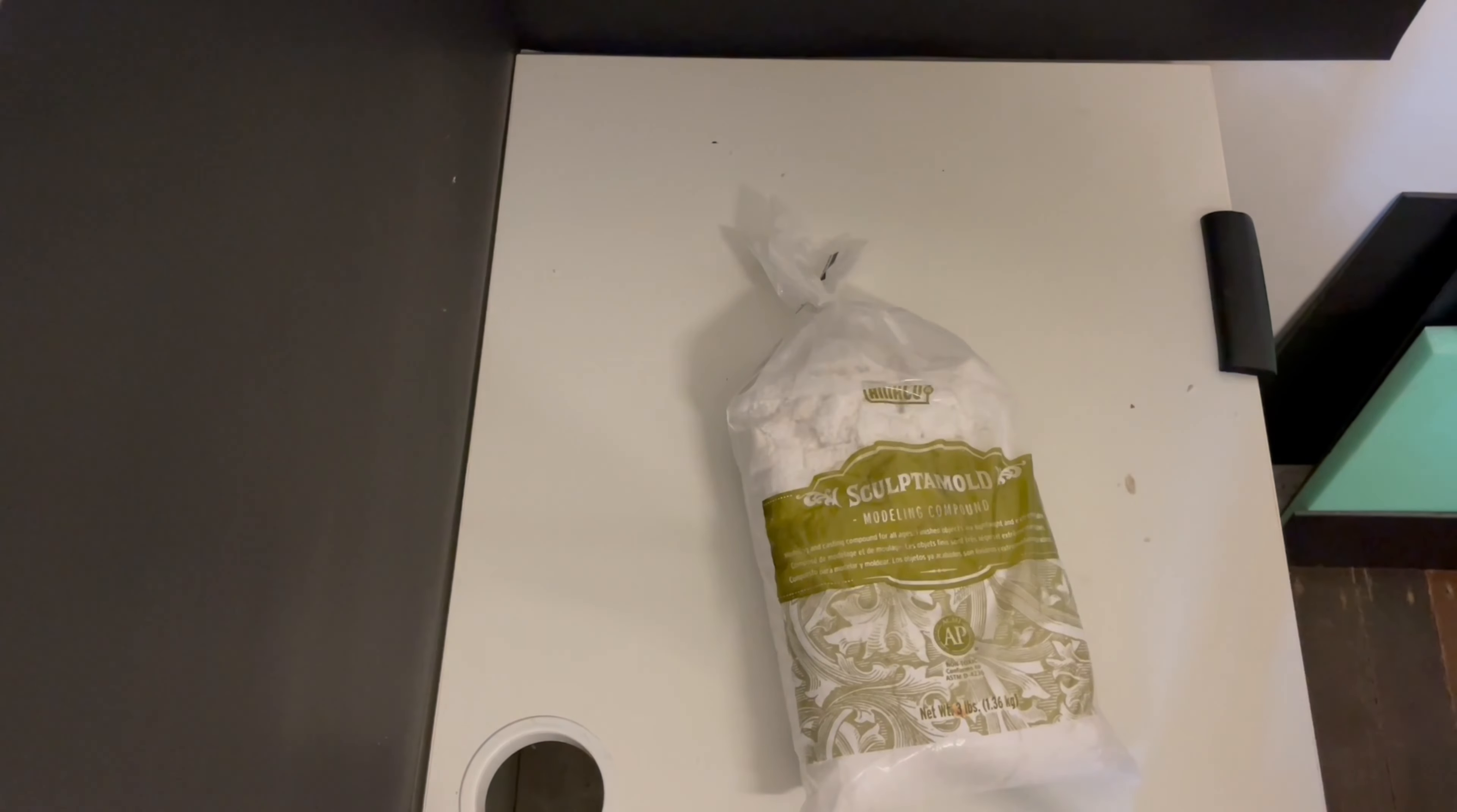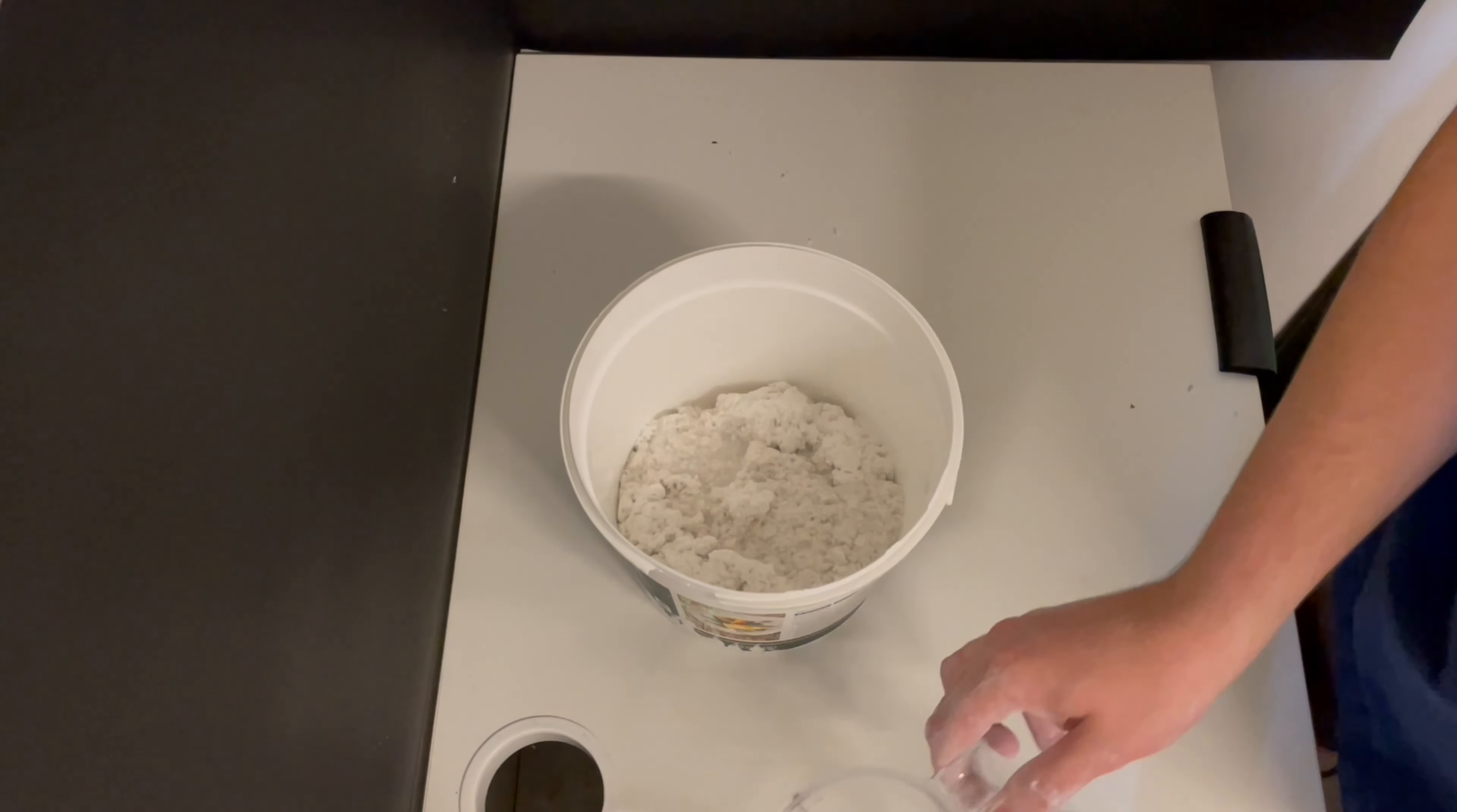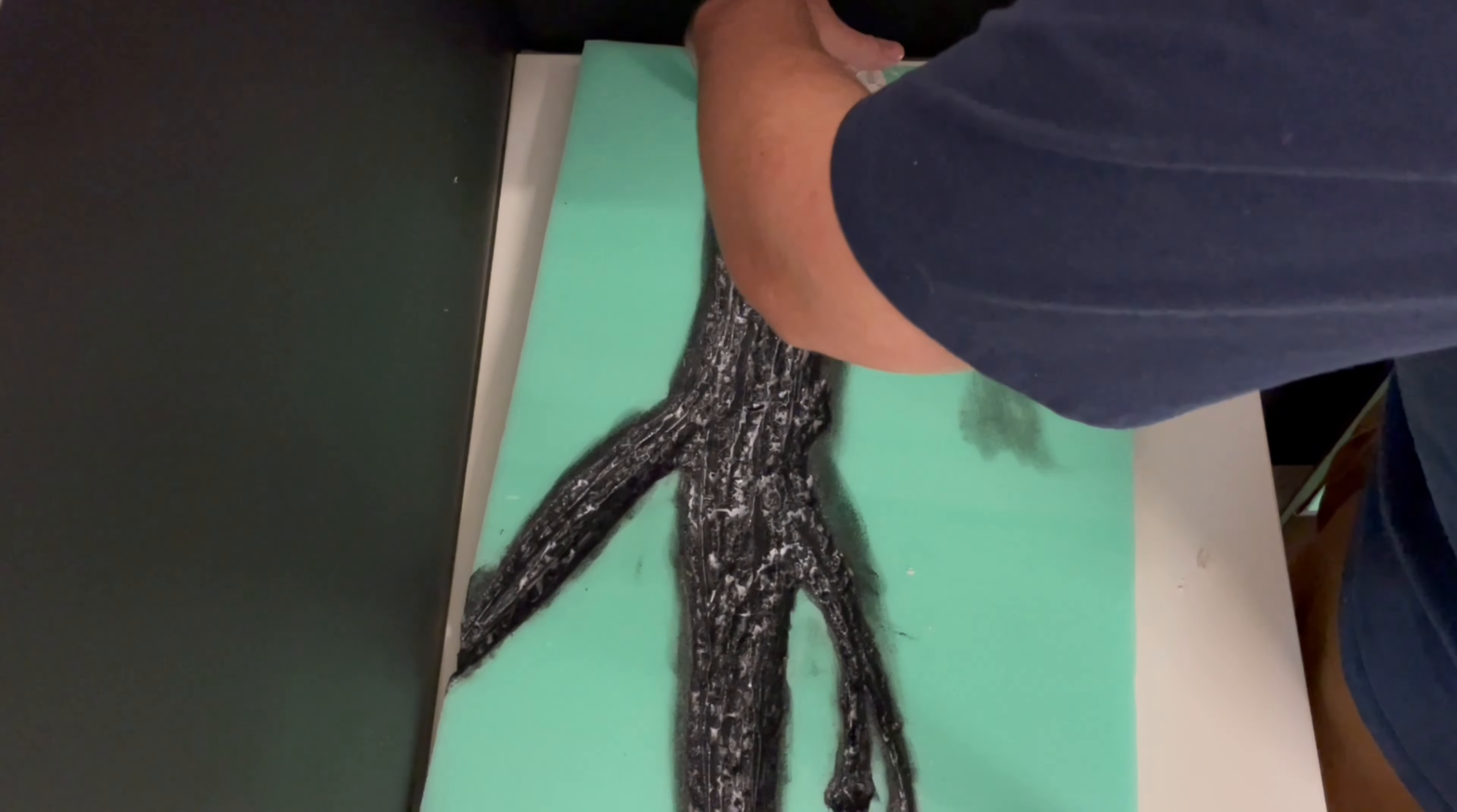Now to build up the base and attach the rock faces, I'm using sculptor mould, which is like a paper cement. I just mix it up with two parts sculptor mould to one part water. When that's all mixed up, I want to build up the lava spout first, so I just kind of slap it all around the spout. You don't have to be too neat with this part because I'll be attaching some rock faces to make it look like it's been pushed up out from the ground.